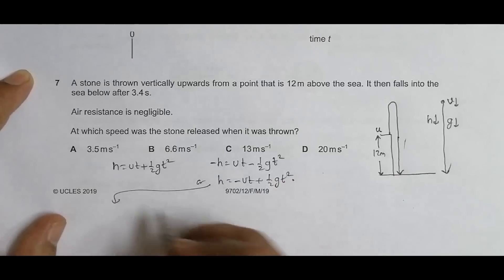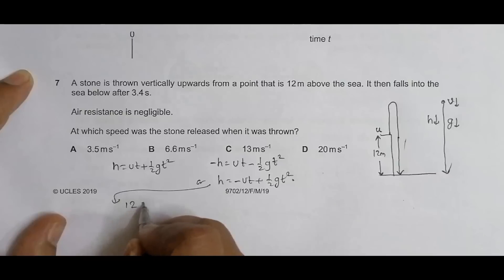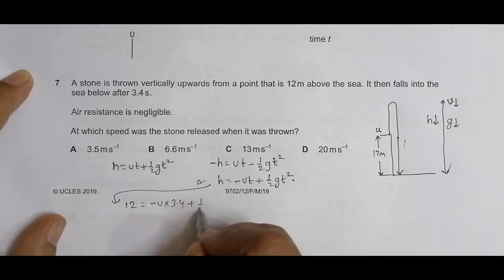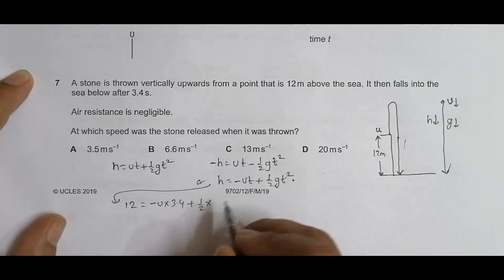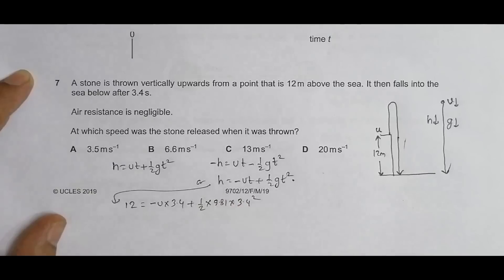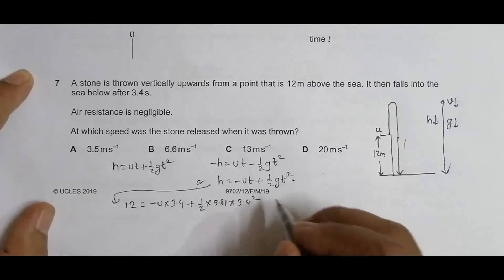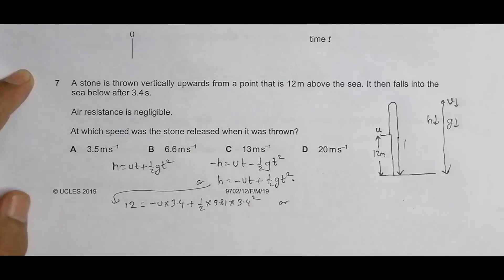Using this equation, substituting h = 12, t = 3.4, and g = 9.81: 12 = −u(3.4) + ½(9.81)(3.4²). Rearranging: [12 − 0.5 × 9.81 × 3.4²] divided by 3.4.